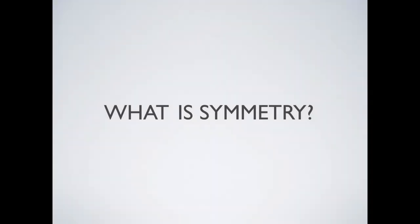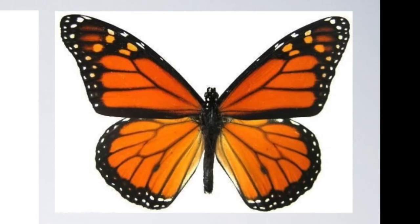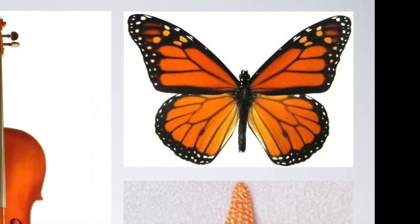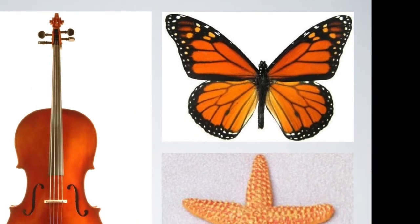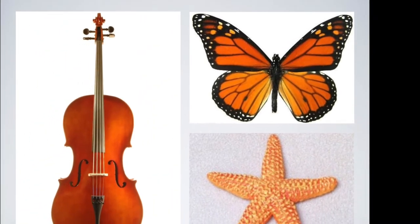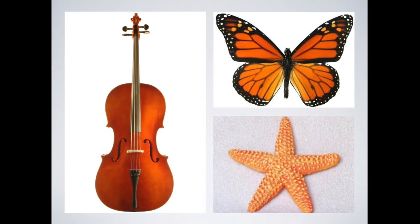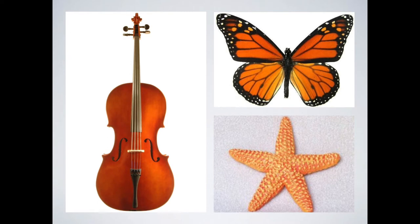Some of you may remember this from art class, and some maybe not at all, so today we're going to review what symmetry is and how it relates to art and our own art-making. Almost any time you hear about symmetry, you see the example of a butterfly. Butterflies are great examples of something symmetrical, meaning they have two identical halves that act as a mirror image of each other. We can draw a line down the middle of the butterfly and the two sides would be identical.